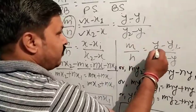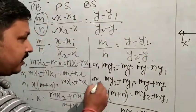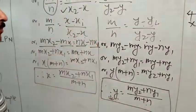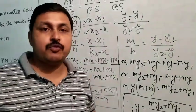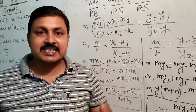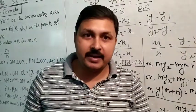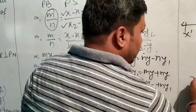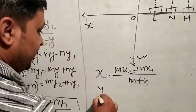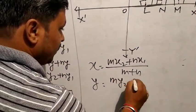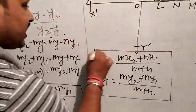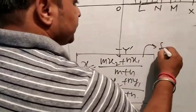Similarly for y: m by n equals y minus y1 by y2 minus y. By cross multiplication we get the value of y. So by the section formula, if a point P divides a line segment in ratio m to n, then x equals mx2 plus nx1 by m plus n, and y equals my2 plus ny1 by m plus n. This is called the section formula.